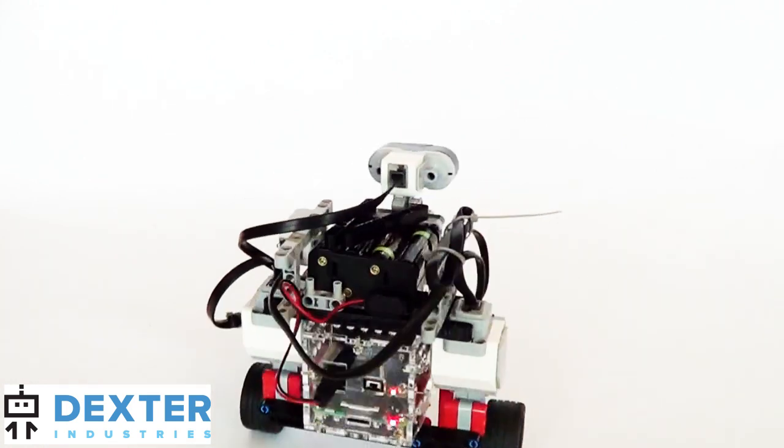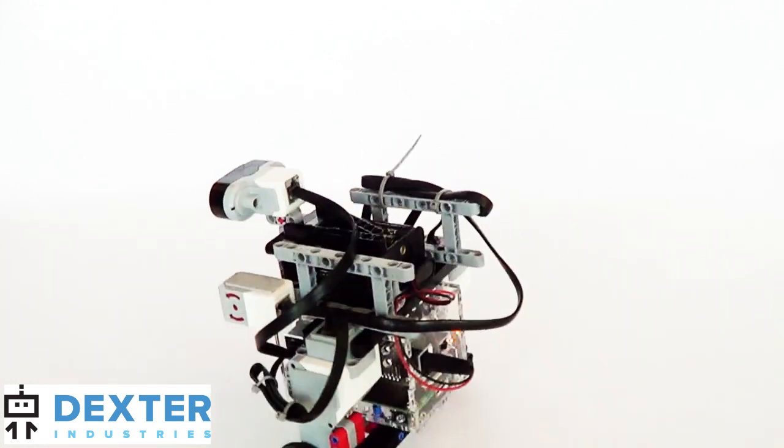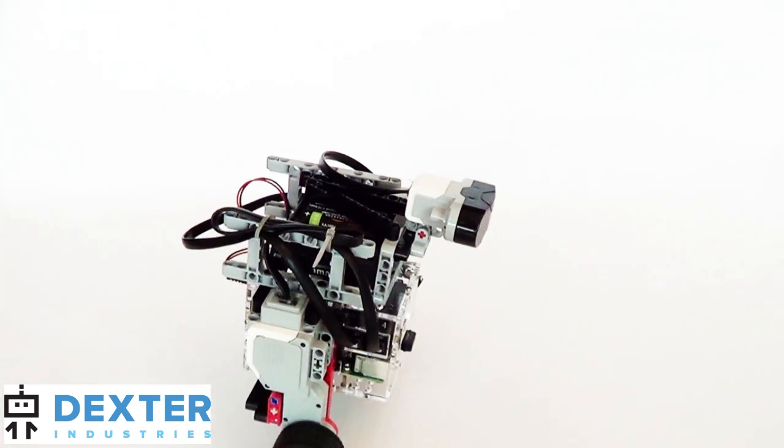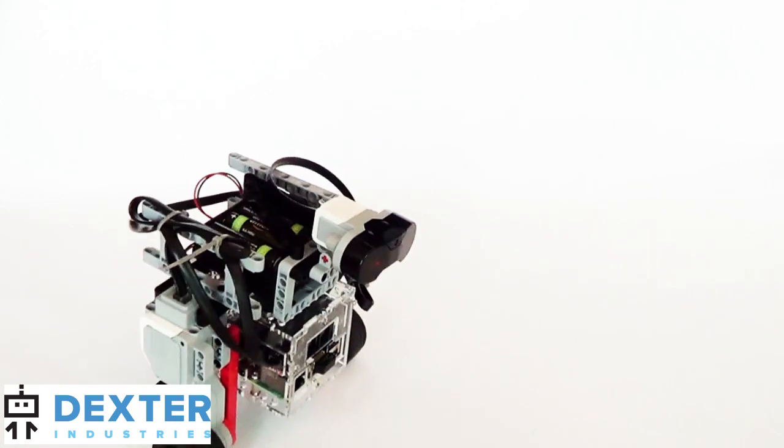BrickPi 3 BalanceBot is a Segway-like robot that balances on two wheels. The robot is built with Lego Mindstorms and powered with the Raspberry Pi and the BrickPi 3. The software runs on Python and reads the EV3 gyro sensor to balance the robot.